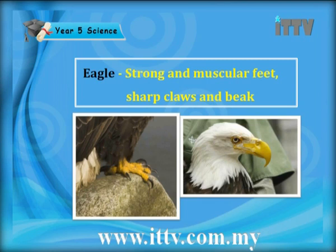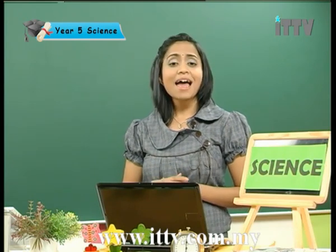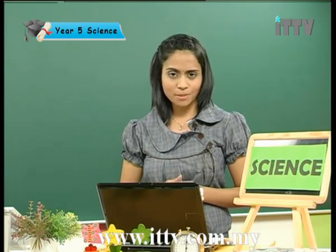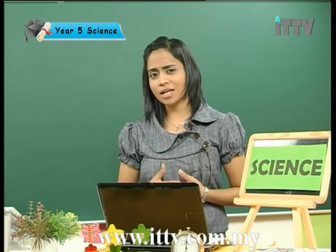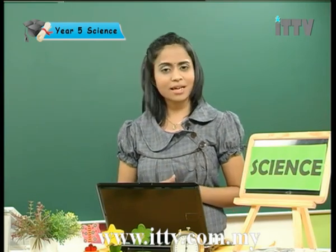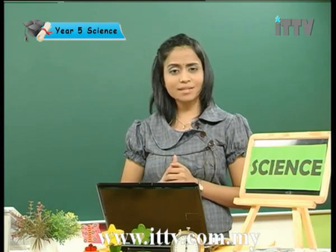Next we have the eagle. The eagle has strong and muscular feet, sharp claws and a beak. The eagle and the tiger have something in common: strong feet and sharp claws. So these were examples of additional features of carnivores like eagle, frogs and tiger. This is how they actually survive.